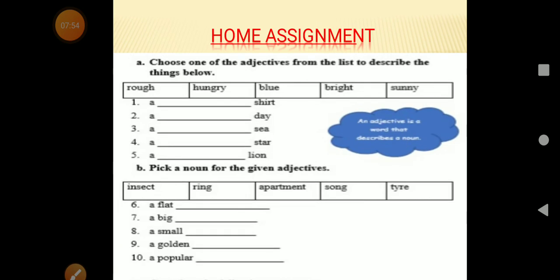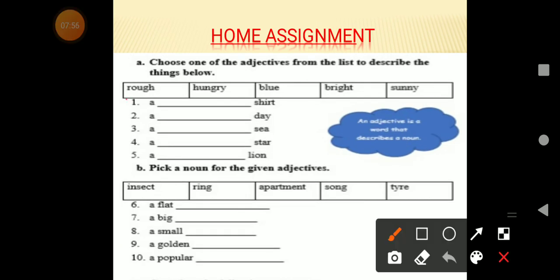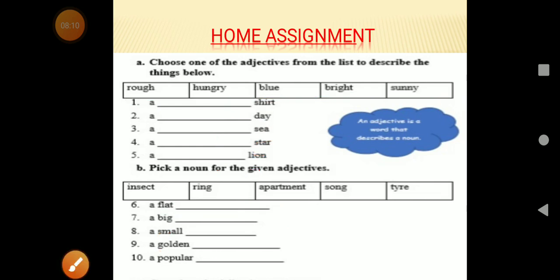Now this is your assignment. Here, in the first section, you have to choose proper adjectives for these: short, tall, red, star. And in these, adjectives are given. You have to write the nouns here. Write the correct noun. Do complete this assignment and send it to me. Thank you so much. And that's all for today's class.